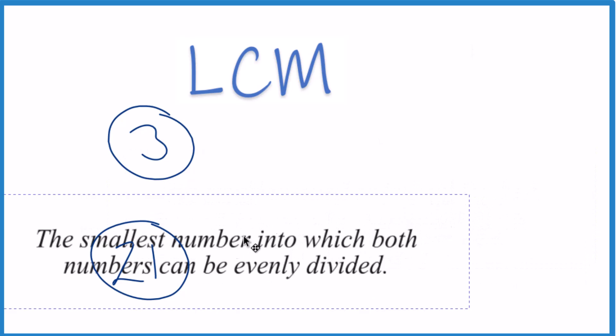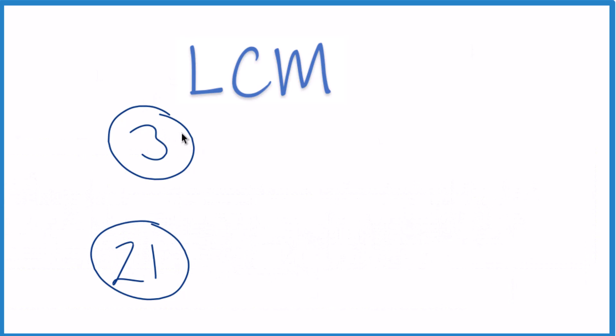So to do that, what we do is we find the multiples of 3 and 21, look at the ones in common, and then we just choose the smallest one that's in common. I like to start with the bigger number.